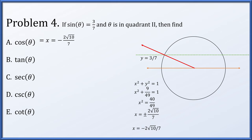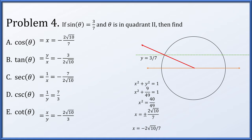Now the cosine of theta is the x coordinate, which we've just found to be −2√10/7. The tangent of theta is the ratio of y to x. We were given that y is equal to positive 3/7, so 3/7 divided by −2√10/7 resolves down to −3 over 2√10. The secant of theta is 1 over the x coordinate, so we reciprocate it. The cosecant of theta is the reciprocal of the y coordinate, and since the sine of theta was 3/7, its reciprocal is 7/3. And the cotangent is the ratio of x to y, which is −2√10 over 3.